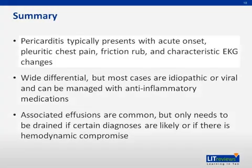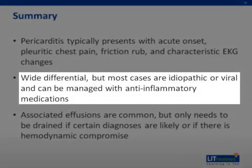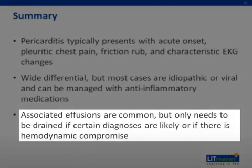In summary, pericarditis typically presents with acute onset pleuritic chest pain, a friction rub, and characteristic EKG changes. There's a wide differential, but most cases are idiopathic or viral and can be managed with anti-inflammatory medications. Associated effusions are common but really only need to be drained if certain diagnoses are more likely or if there is hemodynamic compromise.